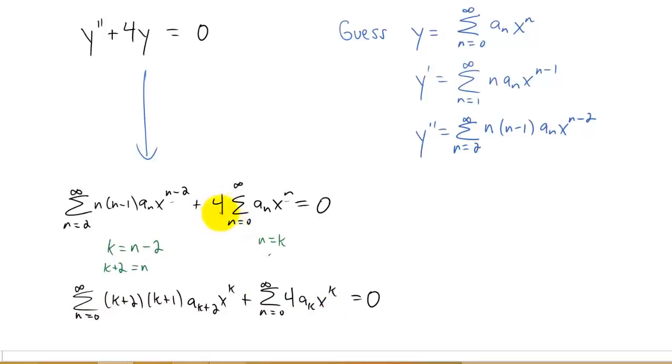You'll notice one thing that I did is I took this 4 and I moved it inside of the summation using the distributive property. If we want to combine two summations, we need the powers on x to be the same, and we also need the lower index of summation to be the same. We actually got that naturally by making this little transition to k.